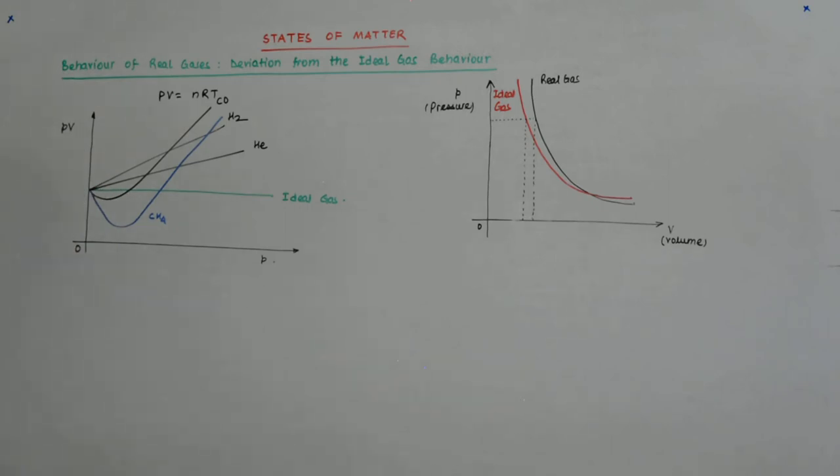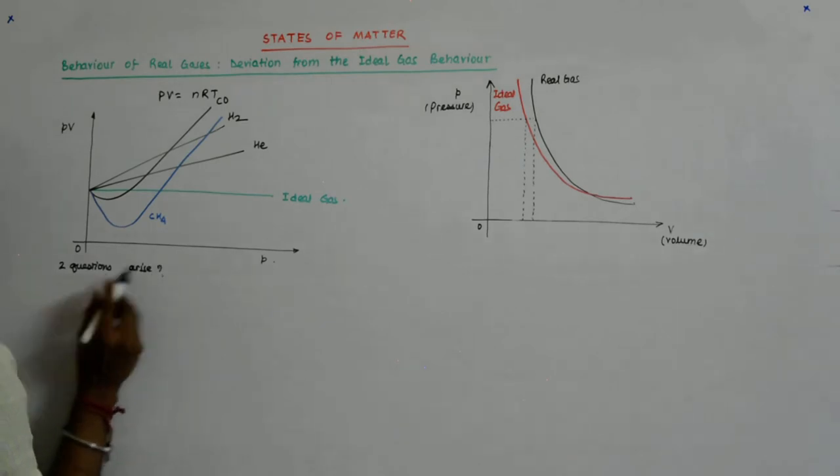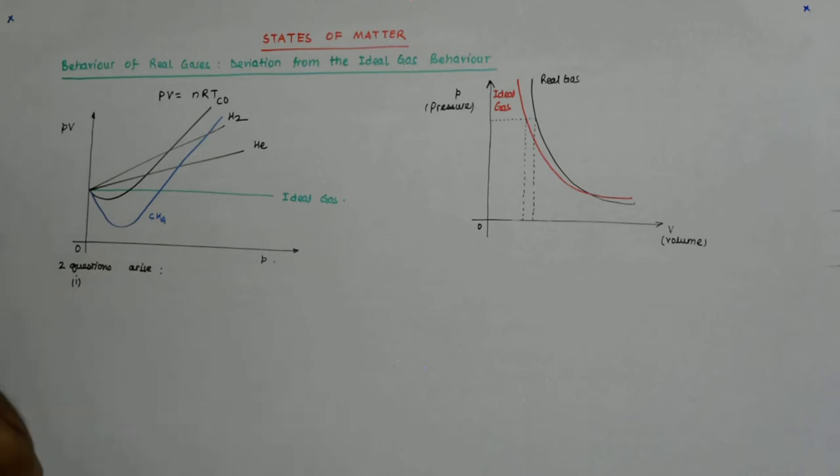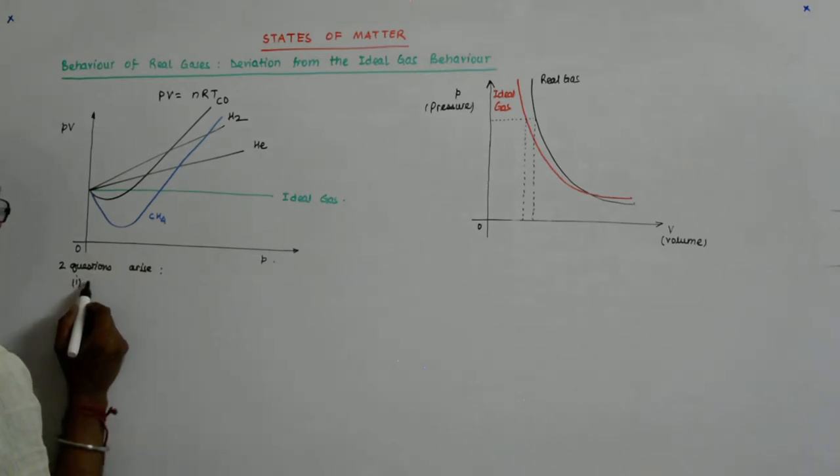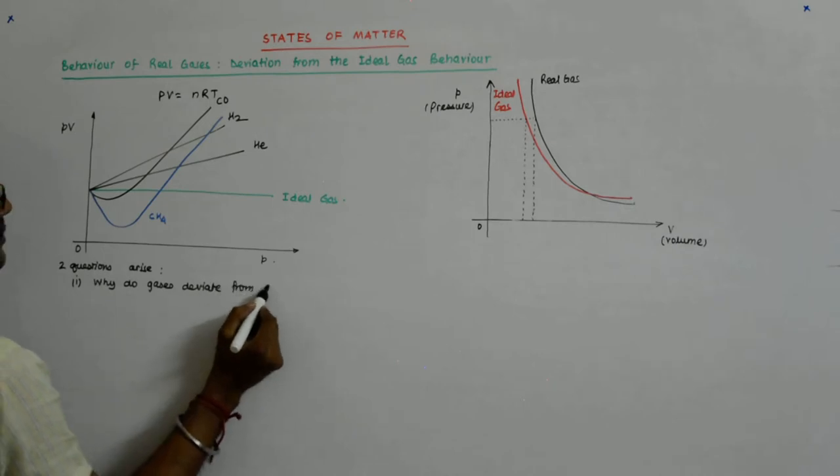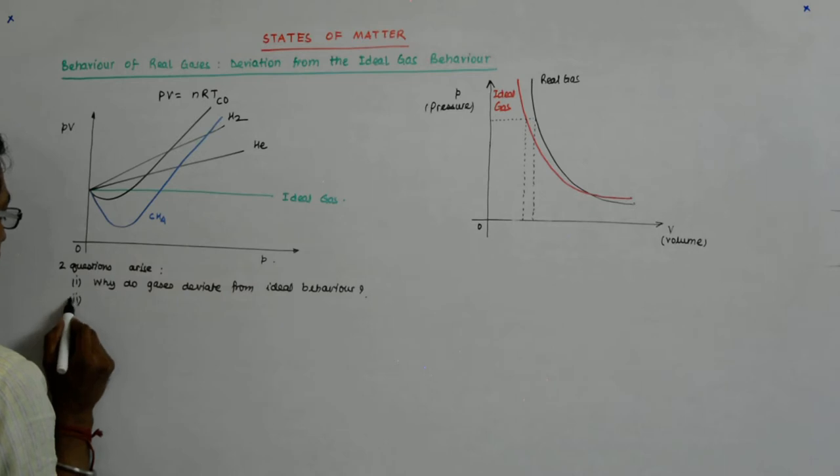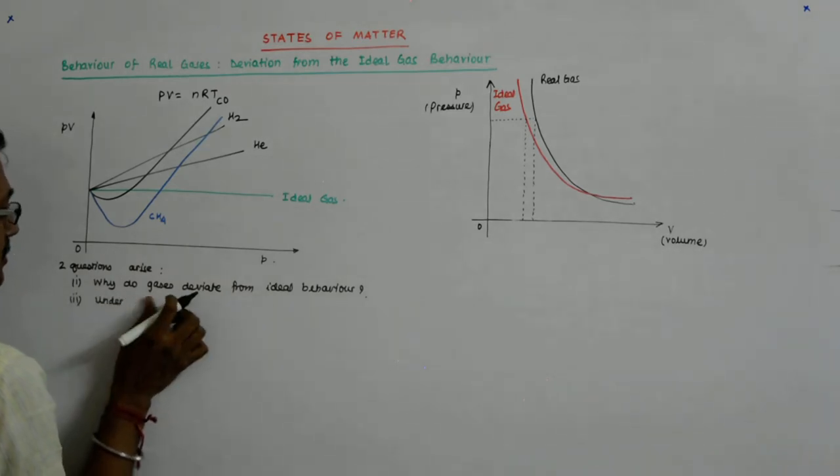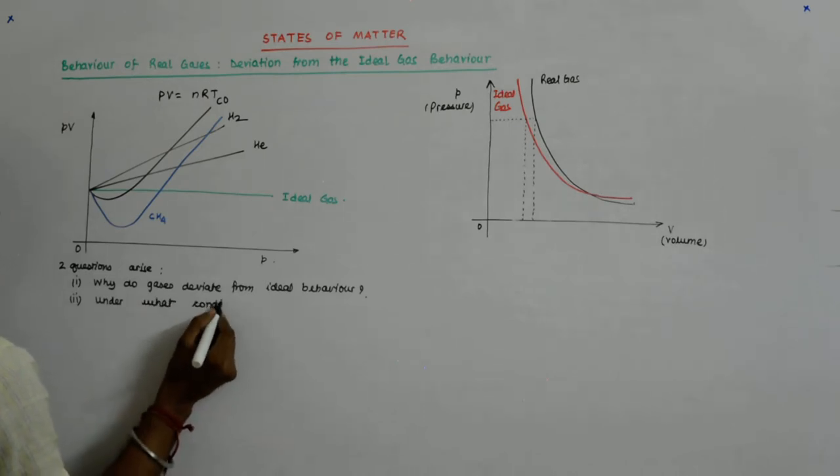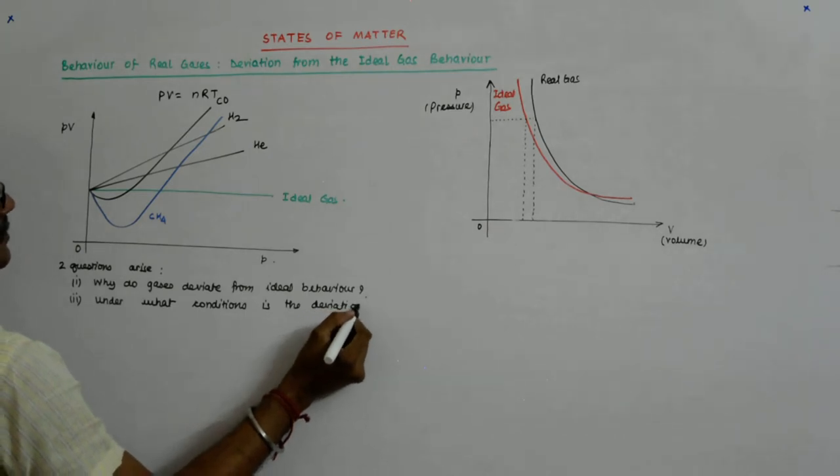So two questions arise. Number one: Why do gases deviate from ideal behavior? And second is, under what conditions is the deviation severe?